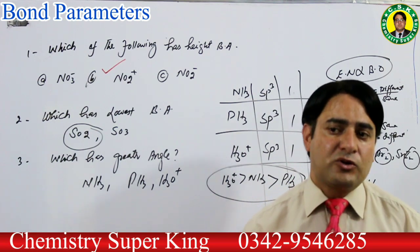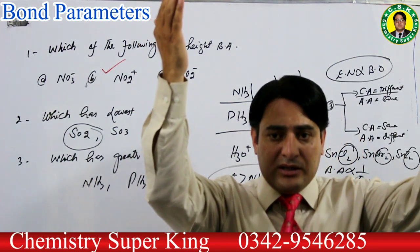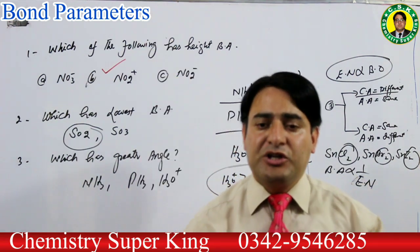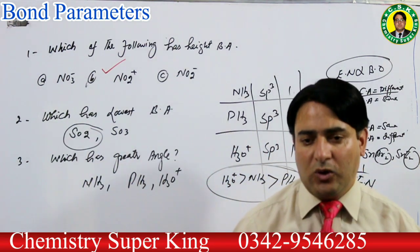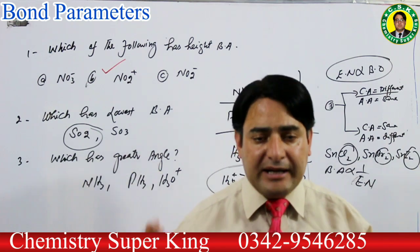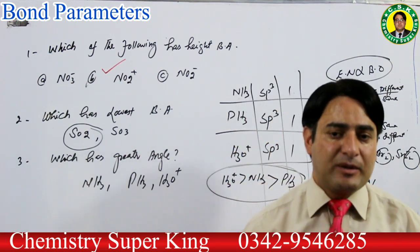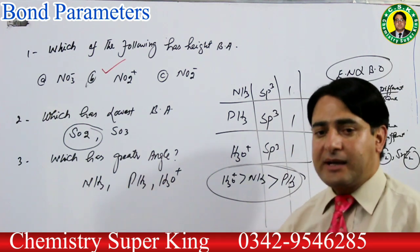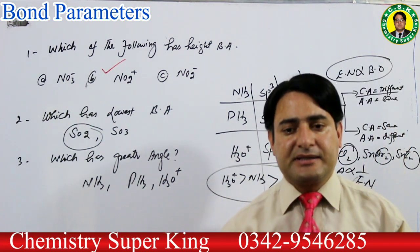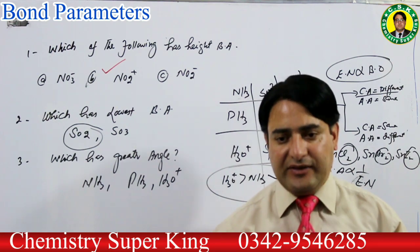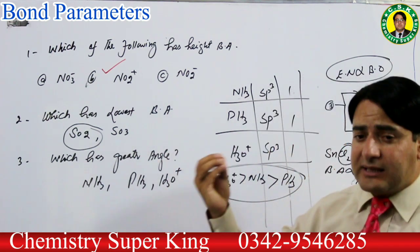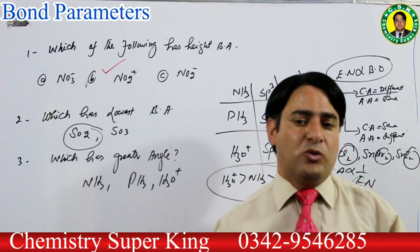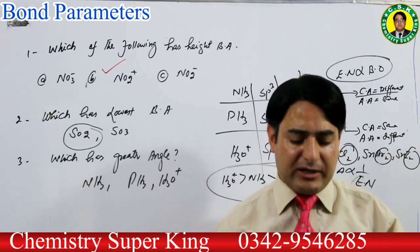Attached atom کی electronegativity زیادہ ہوگی تو bond angle کم ہوگا۔ یہ تین rules ہوتے ہیں bond angle decide کرنے کے لیے۔ Bond angle سے related ایک rule ہے جسے ہم Drago's rule کہتے ہیں — اس پہ بات کرتا ہوں۔